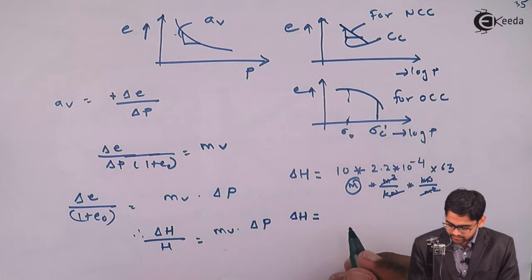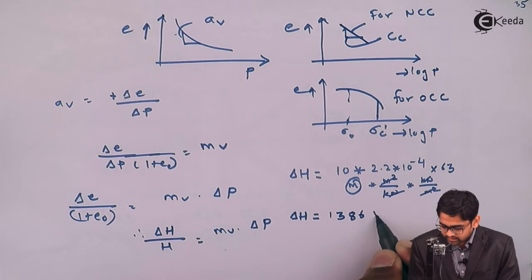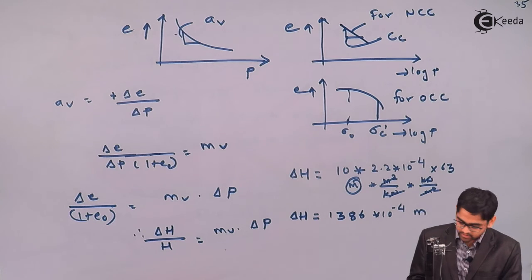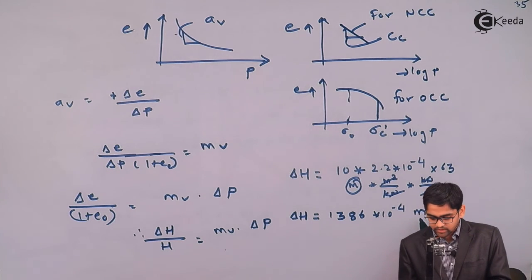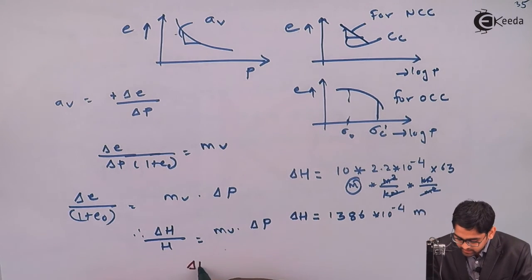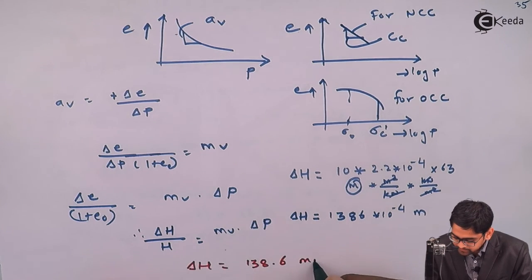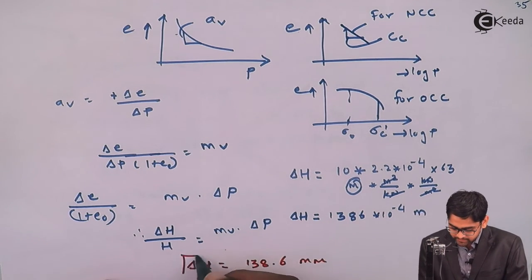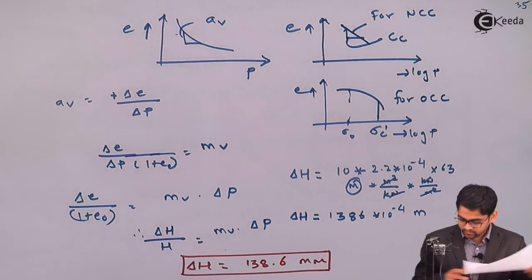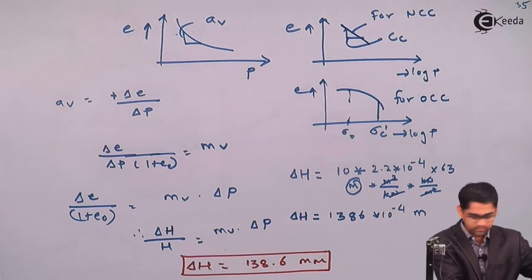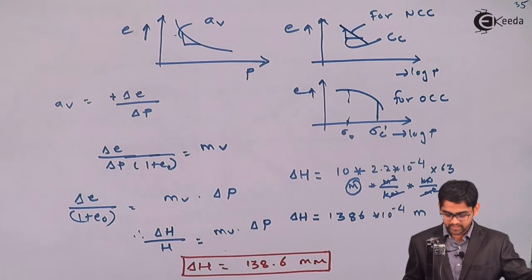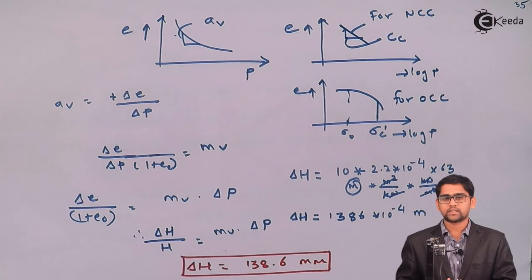You will get 1386×10⁻⁴ meters. Converting to millimeters by multiplying by 10³, you get delta H equals 138.6 mm. Checking against the given options, option B — which is 139 mm — is the correct answer for this problem. This concludes the second problem. We will move on with the next problem. Thank you.